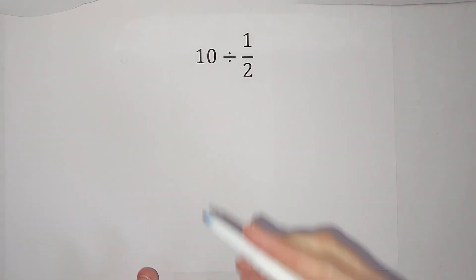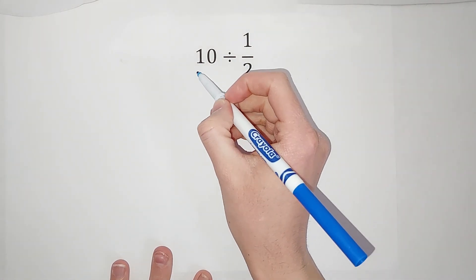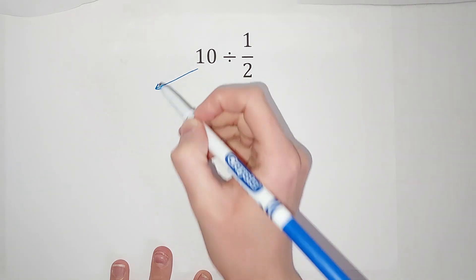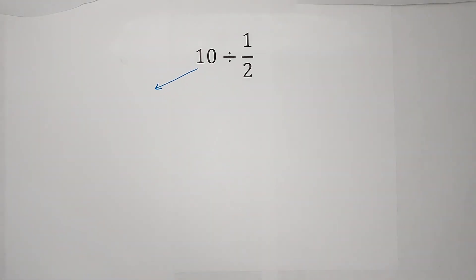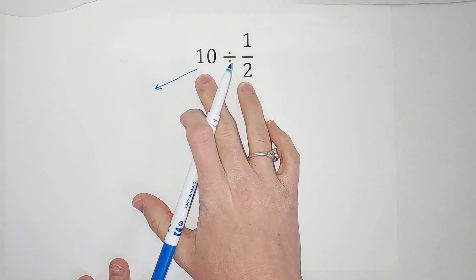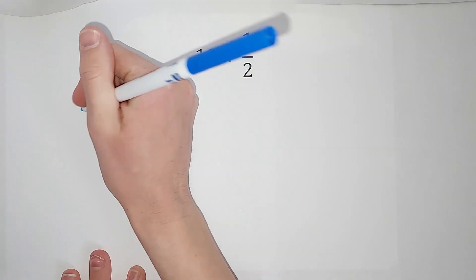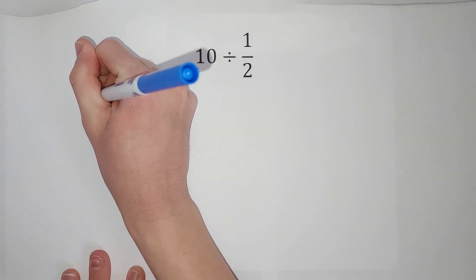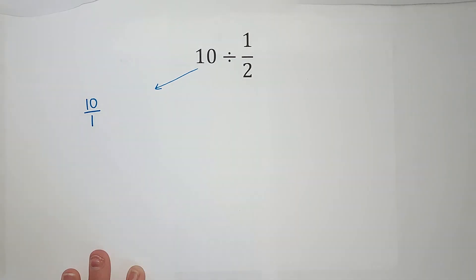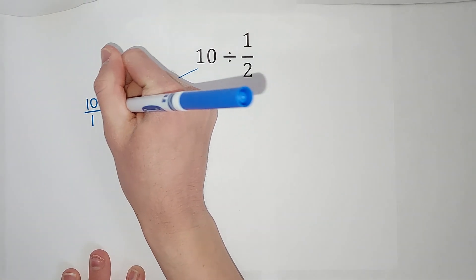I'm going to show it to you a couple different ways. So first, I'm going to show you how we would just do this if we were doing this problem. So 10 doesn't look like a fraction right now, right? But I can make it a fraction by just putting it over a one. So it would look like that, 10 over one divided by one half.